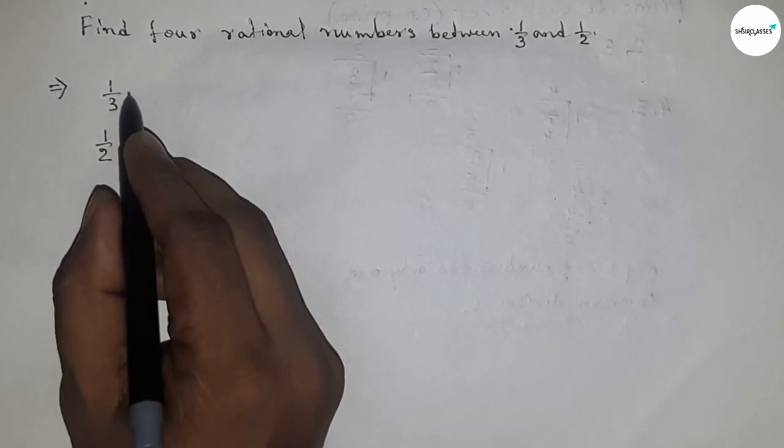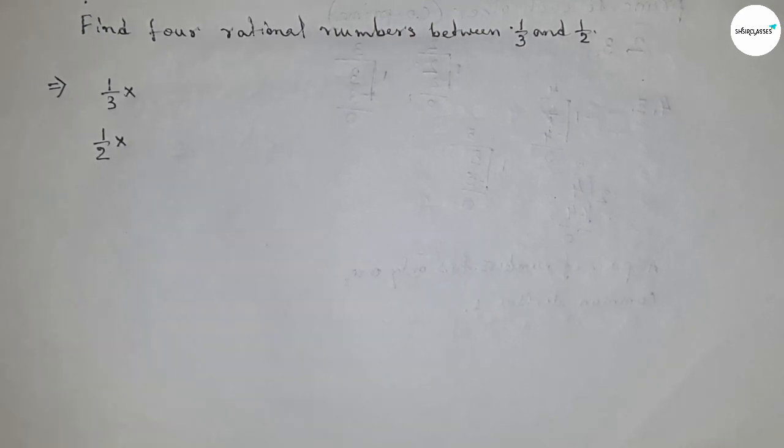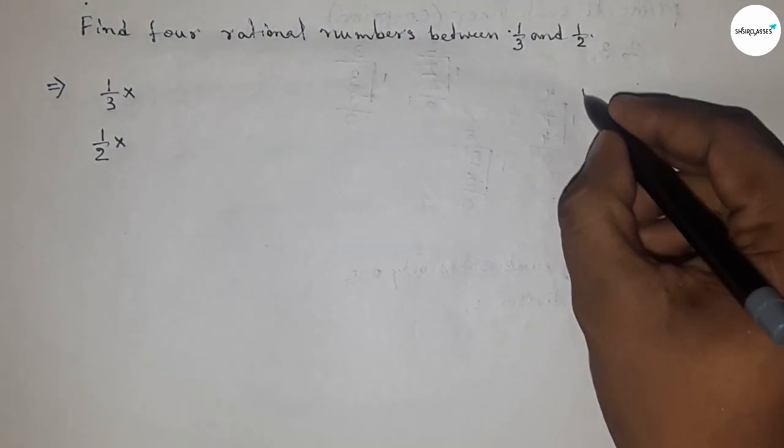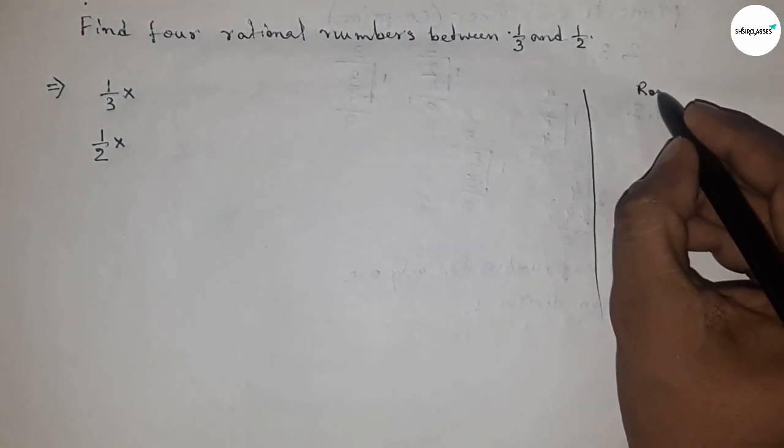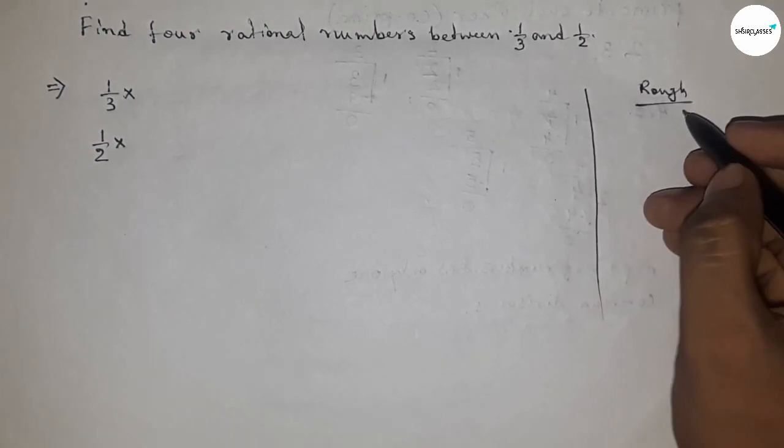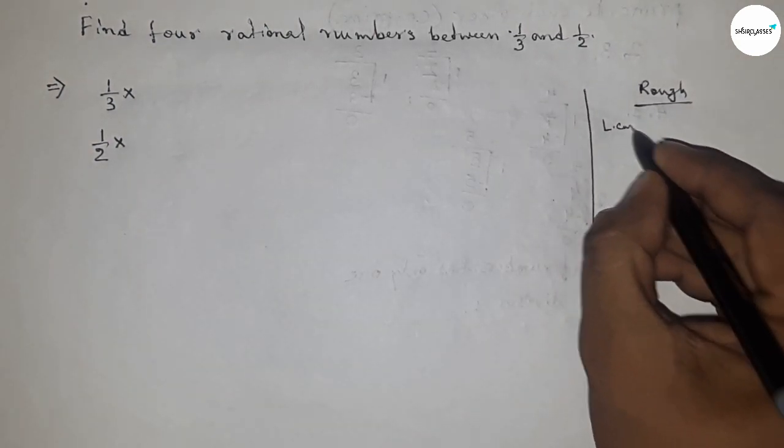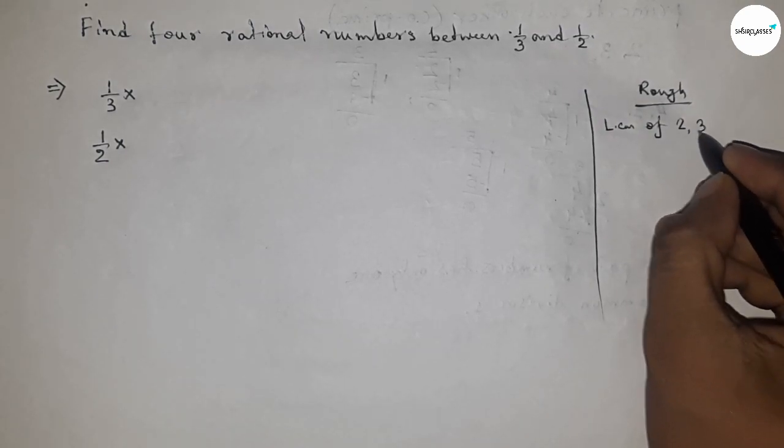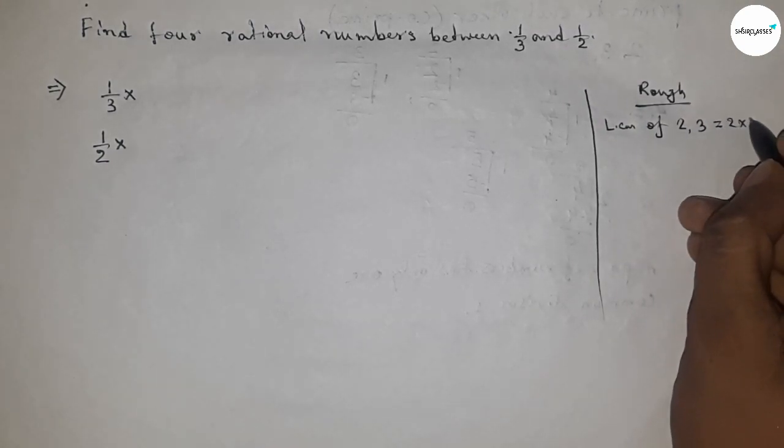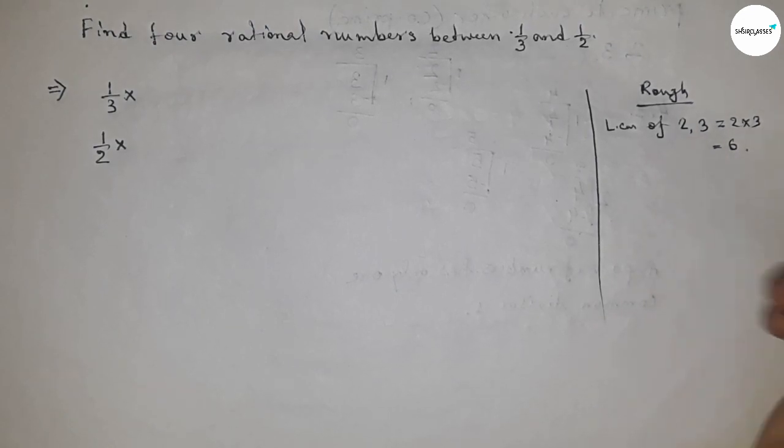Now, discussing the calculation. First, we have to find out the LCM of 2 and 3. The LCM of 2 and 3 equals 6, so we have to make the denominator of both rational numbers 6.